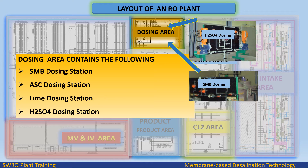Dosing area contains the following: sodium metabisulfite (SMB) dosing station, antiscalant (ASC) dosing station, lime dosing station, and sulfuric acid (H2SO4) dosing station.